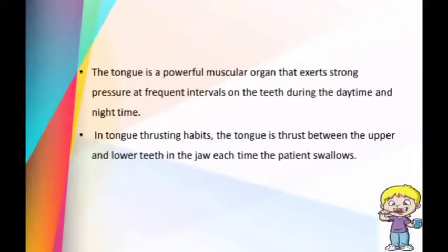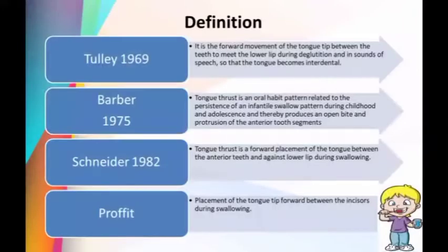The tongue is a powerful muscular organ that exerts force at frequent intervals on the teeth during daytime and nighttime. In the tongue thrusting habit, the tongue is placed between the upper and lower teeth each time the patient swallows. Starting with the definition, in 1969, Juilly gave the definition of tongue thrusting as a forward movement of the tongue tip between the teeth to meet the lower lip during deglutition and in sounds of speech, so that the tongue becomes interdental.